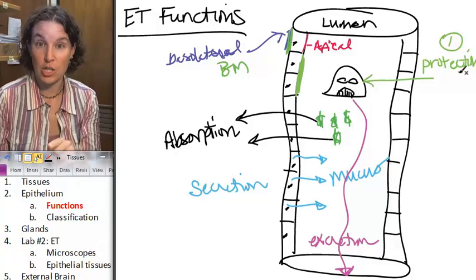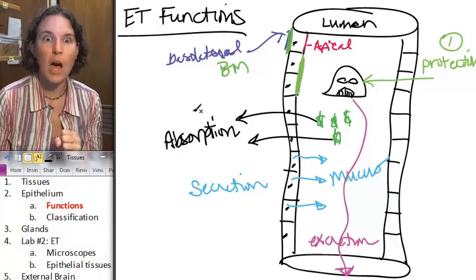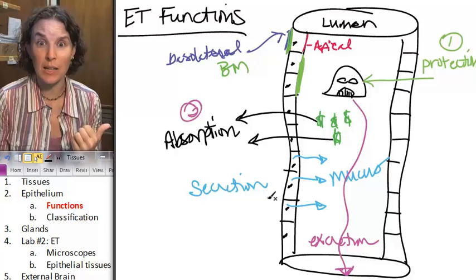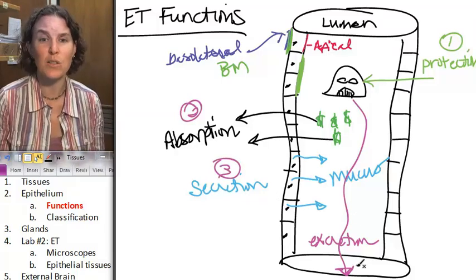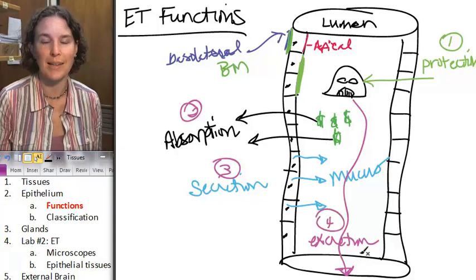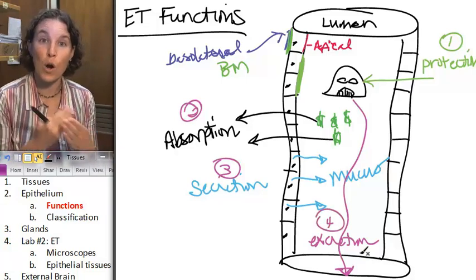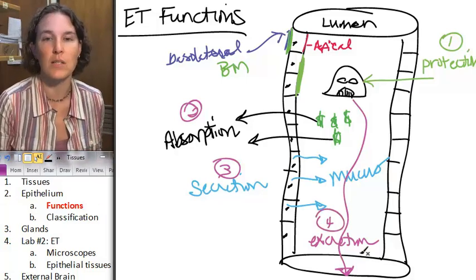So, functions: we had protection, don't let Darth in; absorption, get his money in; secretion, throw some mucus out there so we can excrete him and get him the heck out. Those are four functions of epithelial tissue.